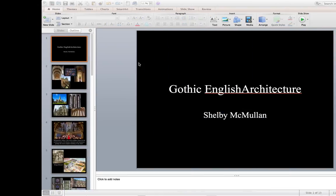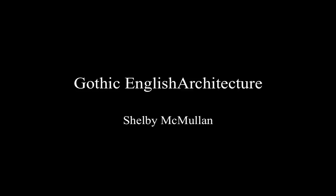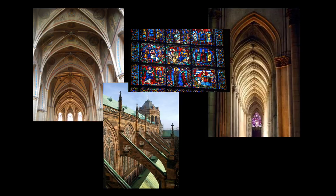I'm going to talk about Gothic English architecture. It began to develop around the 10th century and incorporates traditional Gothic style aspects such as vaulted ceilings, stained glass, strong vertical emphasis, pointed arches, and flying buttresses, which are all shown here.